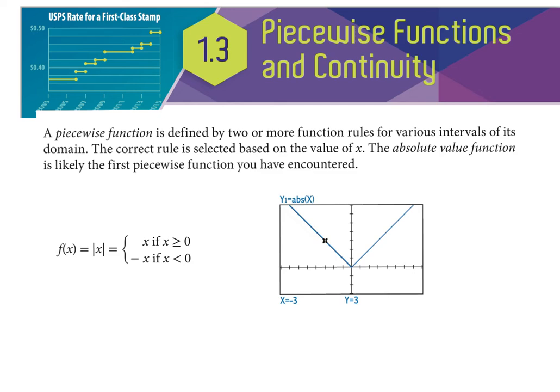The greatest integer function is also called a step function — something that doesn't gradually change. A parabola or linear equation gradually changes, but something like the cost of a stamp does not. It's not continuous. It's a legit step function. Back around 2003, stamps were like 35 cents — they don't go 35.1, 35.2. They jump: 35 cents, then a rate increase to 37 cents, then to 40 cents.